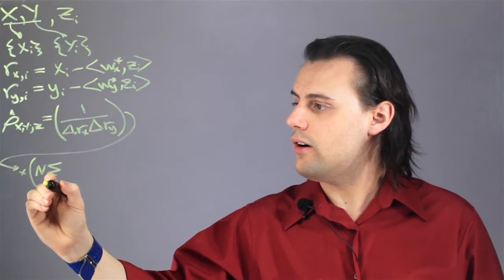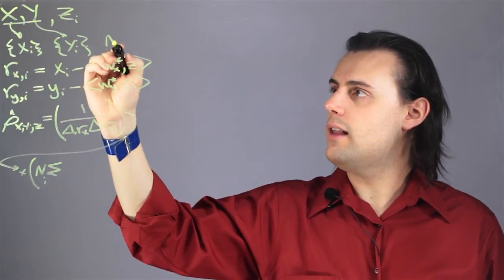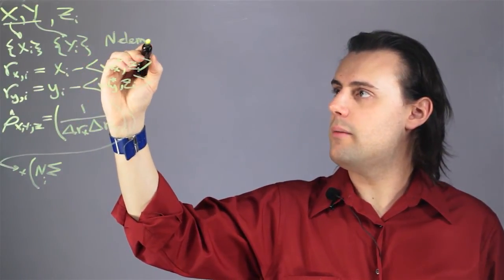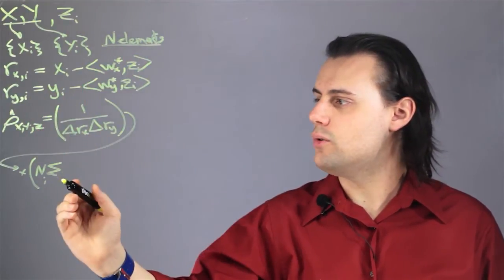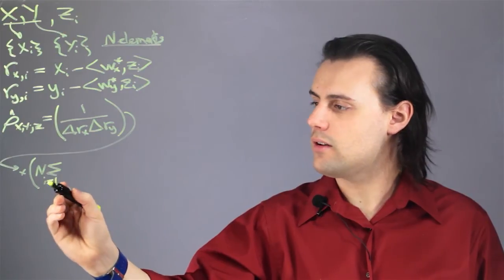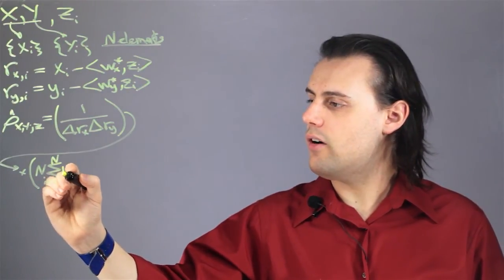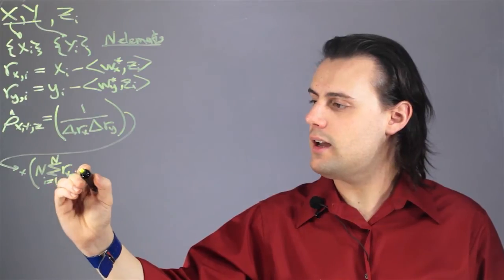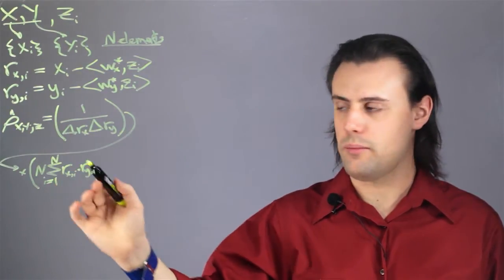If our sets have n elements in them, we're going to have n residual components. So we have a sum going from i equals 1 to n of rxi times ryi, the sum of the products,